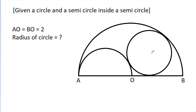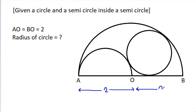In this video, we have been given a circle and a semicircle inside a semicircle, and AO is 2 and BO is 2. We have to find the radius of the circle.